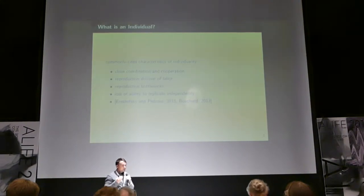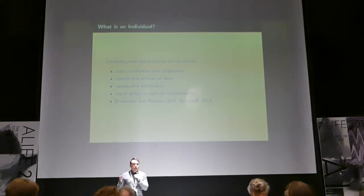If we're talking about individuality, we need to have kind of a framework for thinking about what is an individual. When do you call these entities that have united a new individual in and of themselves? And so, kind of like open-ended evolution itself, there's not a clear cut and dry definition, but there are different aspects that you can kind of think of when trying to decide whether or not a new individual has emerged.